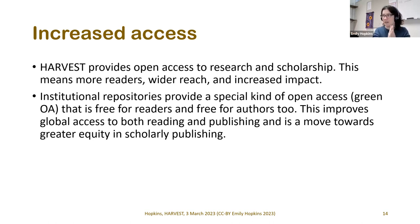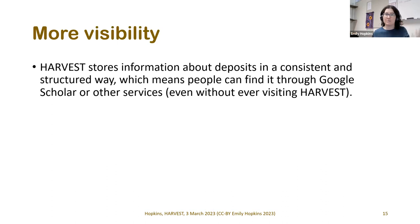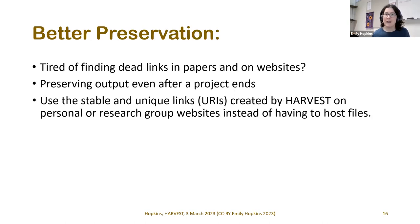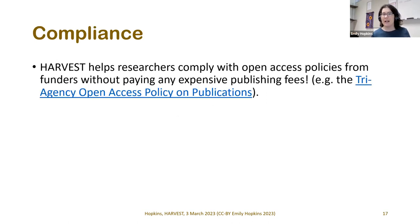Some kinds of open access focus on the cost for the reader, which is key, but for global knowledge production we also need to make sure authorship is accessible. Harvest ensures more visibility by storing deposit information in a consistent structured way, so work shows up in Google Scholar and other services. It also provides better preservation — links can break when people host things themselves — and provides stable unique links. Harvest also helps with compliance with the tri-agency open access policy and other granting agency requirements.